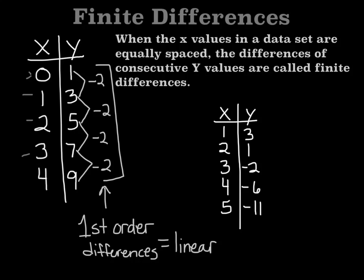So here's a new one. Look at this data set: 1, 2, 3, 4, 5 for our x, so those are equally spaced. If I took the y values and subtracted, 3 minus 1, I get 2. 1 minus negative 2, I get 3. Negative 2 minus negative 6 gives me 4. And negative 6 minus negative 11 gives me 5. Those are not the same, so we have to do this again. Now we go 3 minus 2, we get 1. And then we do 4 minus 3, and we get 1.